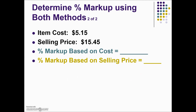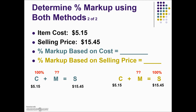We have another problem similar to the last one. We're given a cost and selling price and asked to calculate the markup based on both cost and selling price. So we have our two formulas — the location of our base is dependent upon the percent markup: cost on the left and selling price on the right. We're given the cost and the selling price. Knowing cost and selling price, we can subtract cost from selling price to give us our markup amount — in both cases being the same dollar for dollar. To determine the percent markup based on cost, we're looking for a rate; we have a part and we have our base.